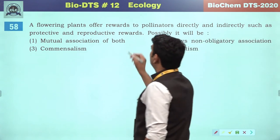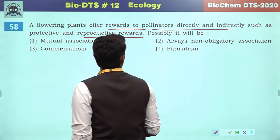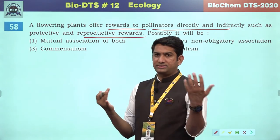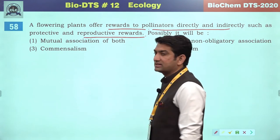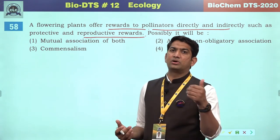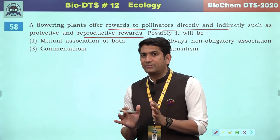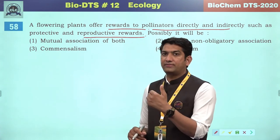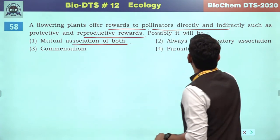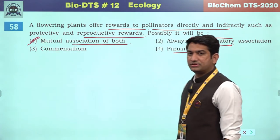A flowering plant offers rewards to pollinators directly and indirectly, such as protective and reproductive rewards. Pollinators are given reproductive rewards — safe egg-laying space. Orchid and bee pollinator relationships, moth and Yucca relationships, Amorphophallus flowers — all these relationships are obligatory. Non-obligatory rewards after supporting rewards are possible, but bilkul non-obligatory is not possible. So definitely the correct answer will be the first option.